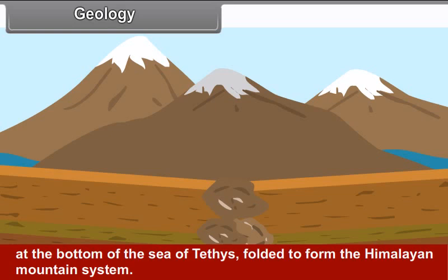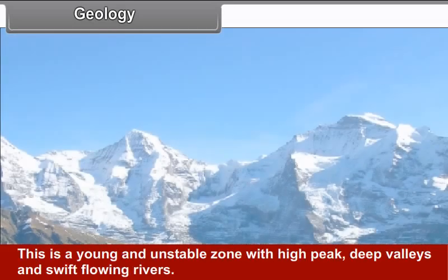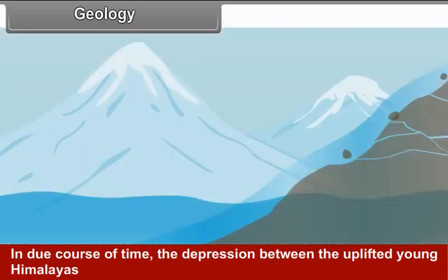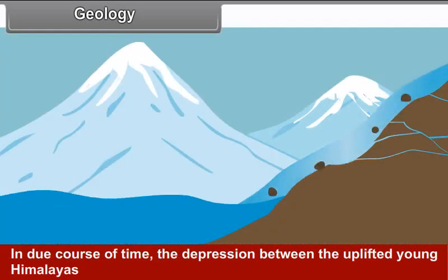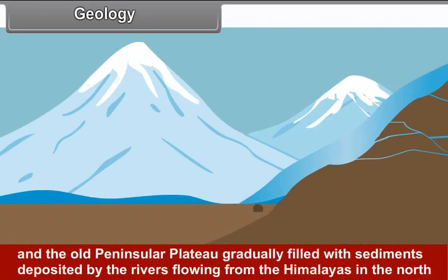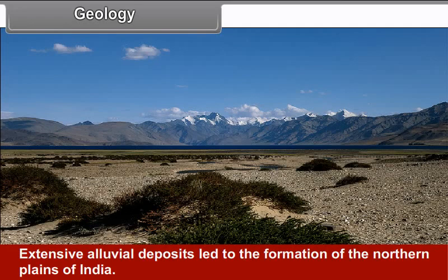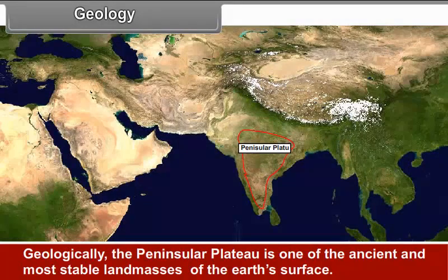The Gondwana land was a single landmass that included South America, Africa, India, Australia and Antarctica. Convectional currents split the crust into a number of pieces. The Indo-Australian plate drifted northward after being separated from Gondwana land. This northward drift resulted in the collision of the plate with the much larger Eurasian plate. Due to this collision, the sedimentary rocks formed at the bottom of the Tethys Sea folded to form the Himalayan mountain system.